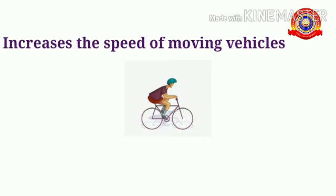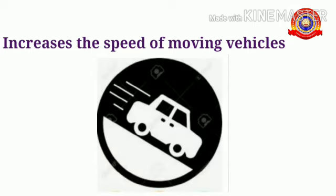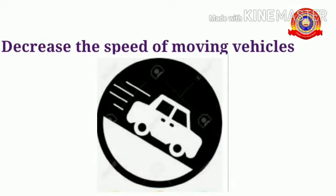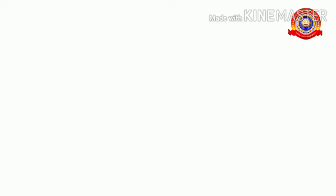Next, increases the speed of moving vehicles — a cyclist applies more force on the pedal is the example for that. Decrease the speed of moving vehicles — drivers apply brakes when the vehicle goes down a slope is an example for that. So students, these are the important points we discussed in this chapter along with motion. Study it well. Thank you.